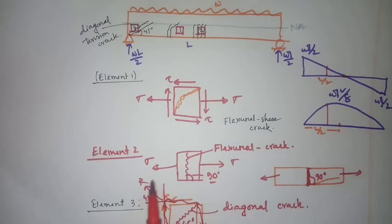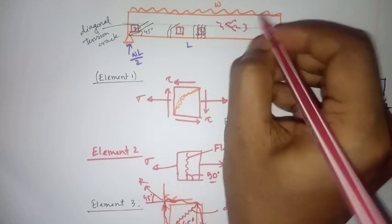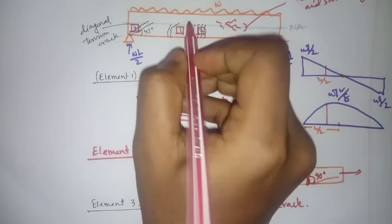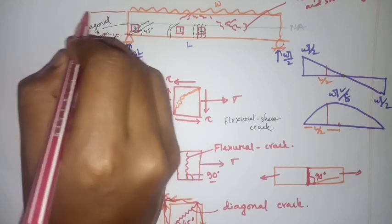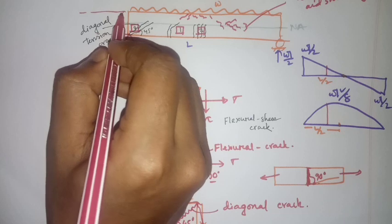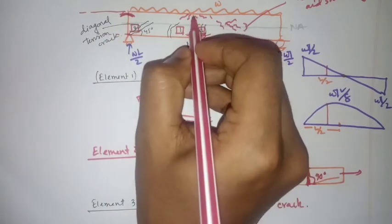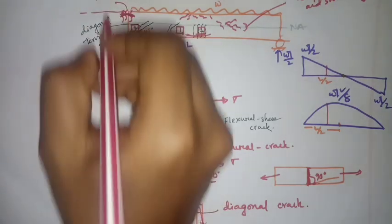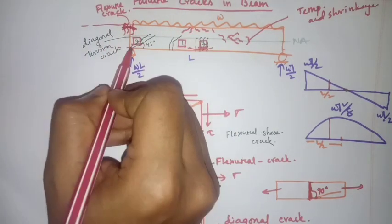So these are the basic types of cracks developed in a simply supported beam. In addition, there are temperature and shrinkage cracks due to temperature and shrinkage effects. Sometimes in the compression zone, a diagonal compression crack is also developed. If the beam is continuous, flexural cracks will also be created at the top, because that region becomes a tension zone, while the bottom becomes a compression zone.